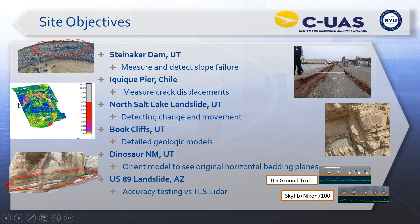For the North Salt Lake landslide, you can see here two 3D models and we're looking for changes between them. High areas of change are shown in red — you can see where the house was and then was removed, which represents a lot of change. But you can also see in this color graph that there's still some erosion taking place and possibly some movement at the toe of the landslide. With multiple 3D models, we can put those together and do change detection.